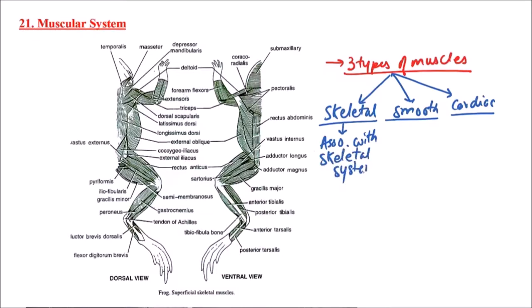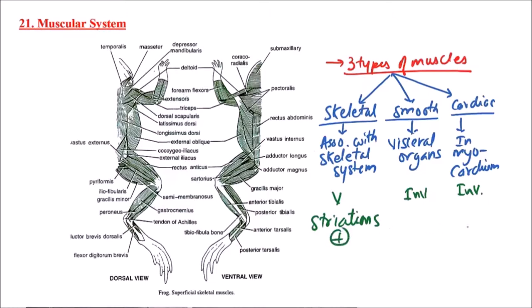The smooth muscles are found in visceral organs like gut, and cardiac muscles are found in the myocardium of heart. Skeletal muscles are voluntary, smooth muscles are involuntary, and cardiac muscles are also involuntary. Striations can be observed in skeletal and cardiac muscles but are absent in smooth muscles. The skeletal muscles are about 200 in number.